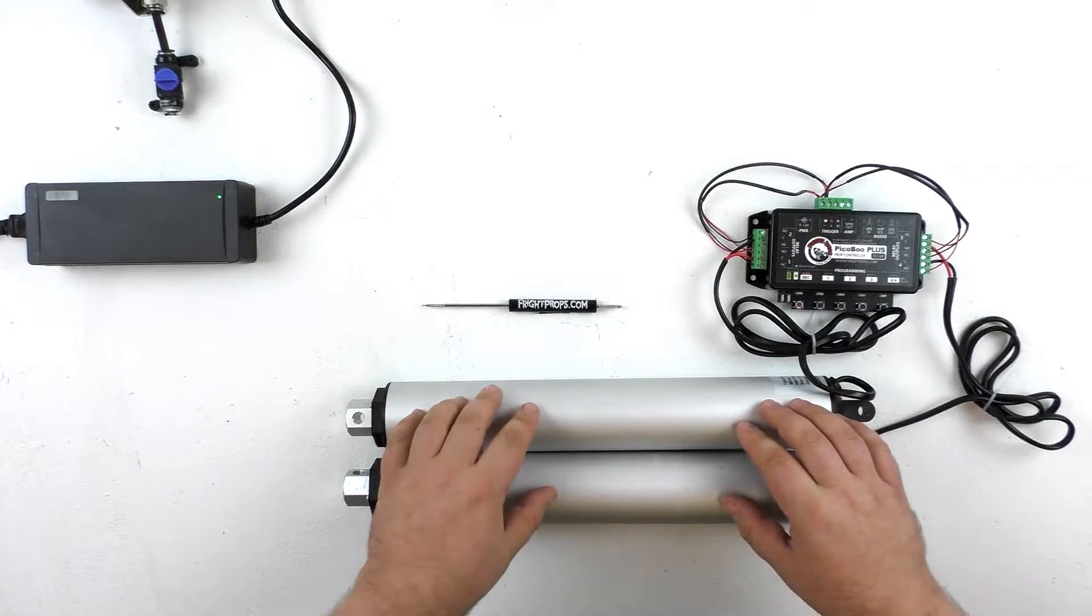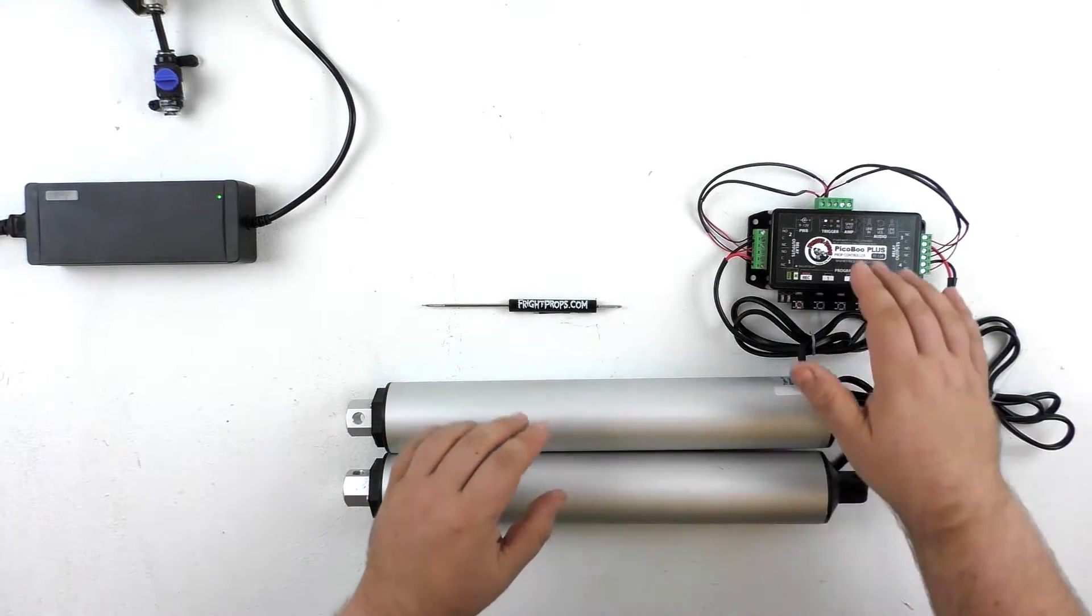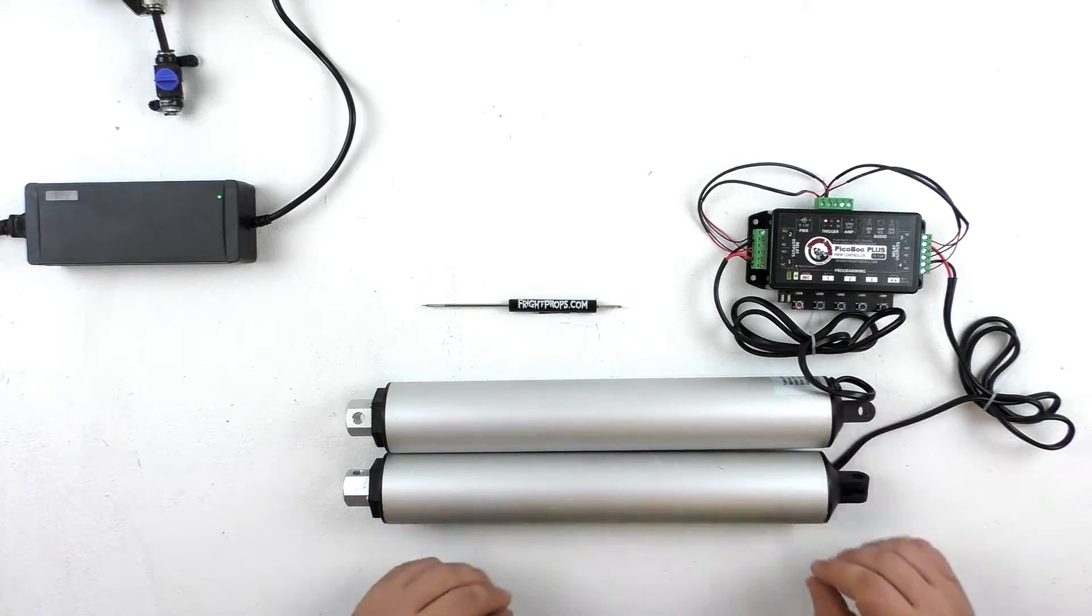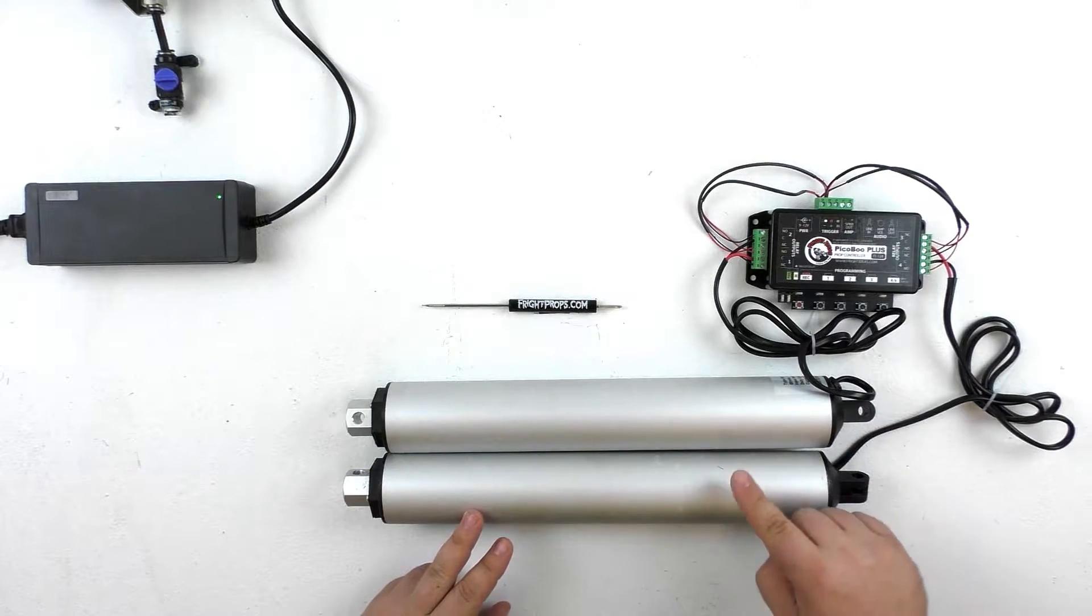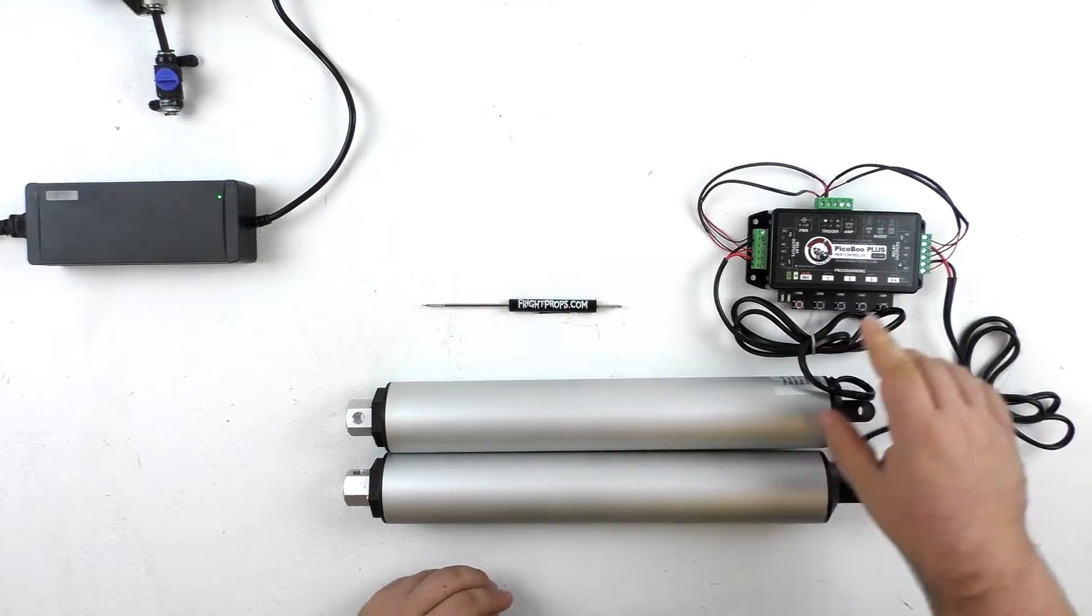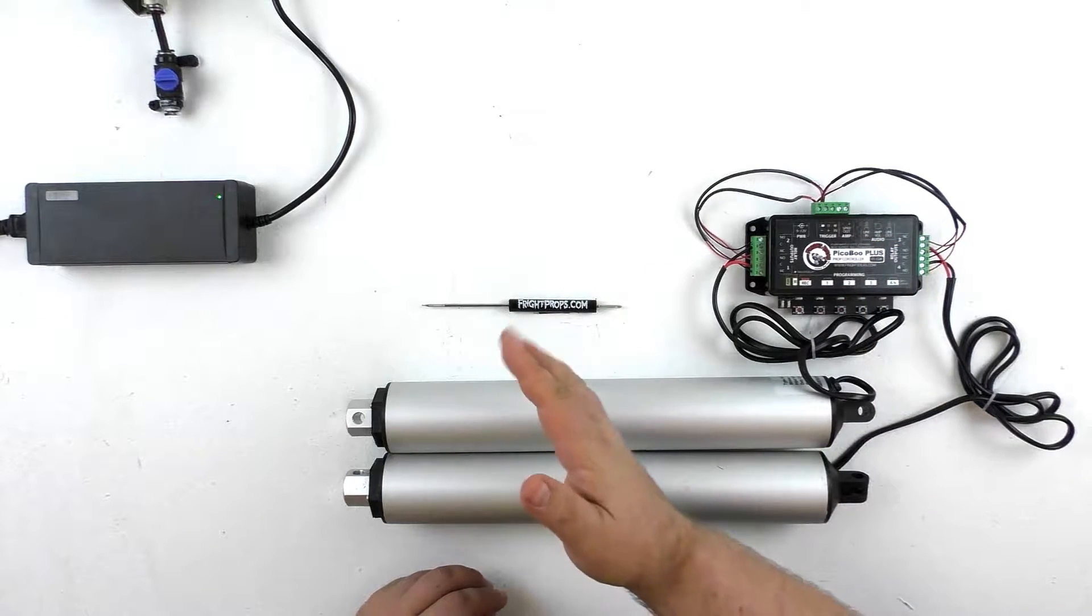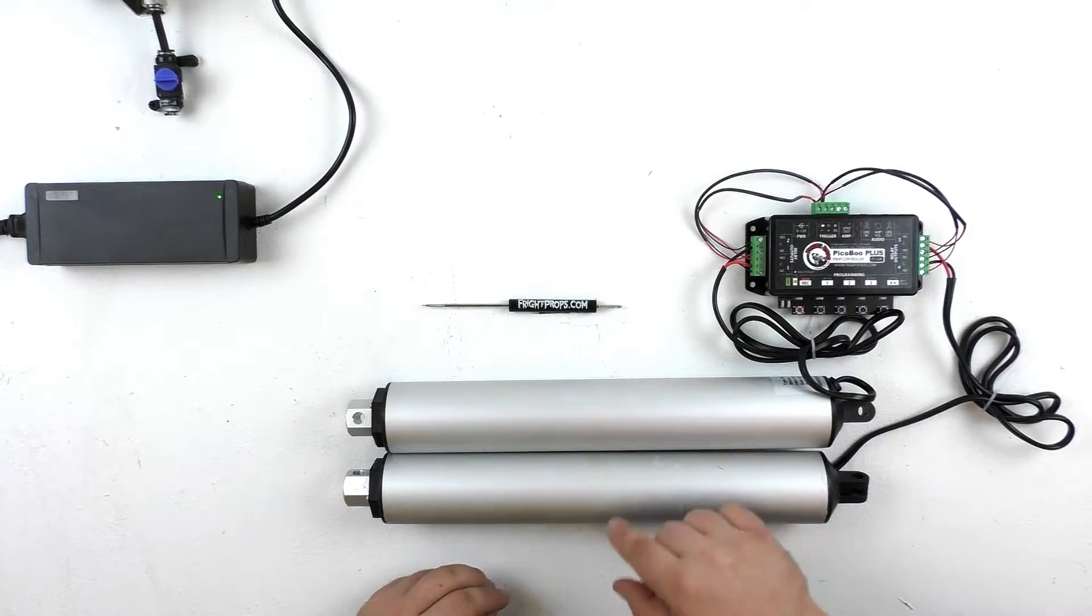We thought that's a cool idea so we actually created a kit using linear actuators and a Peekaboo Plus controller that would allow you to create a prop just like that. So you can see here we have two linear actuators, we have our Peekaboo Plus controller and I've wired the linear actuators into the controller so that we can control both their extension and retraction of each of the two linear actuators.